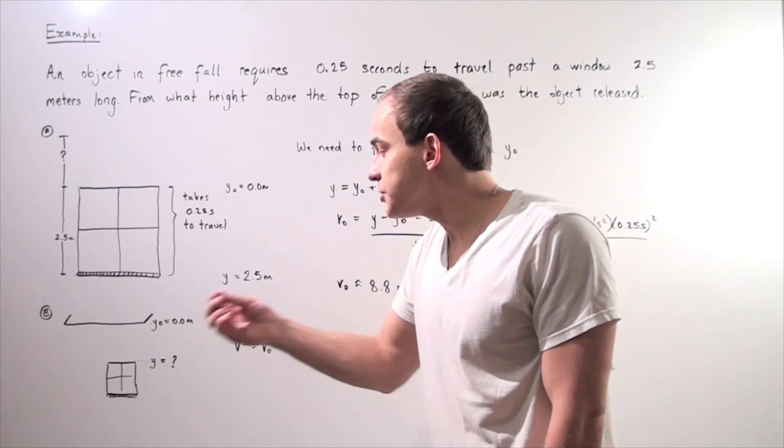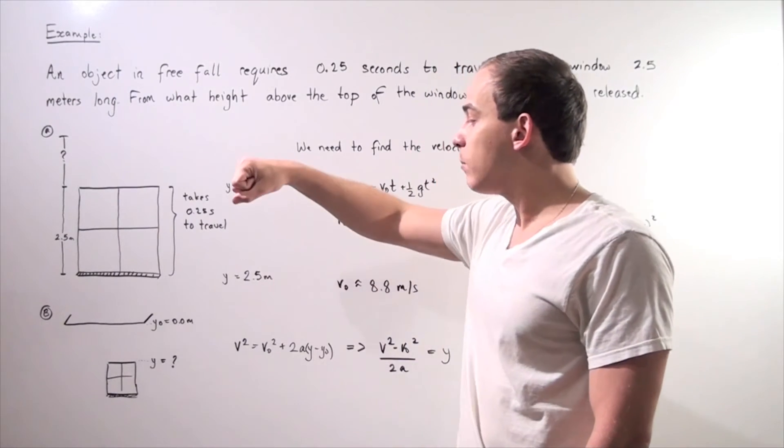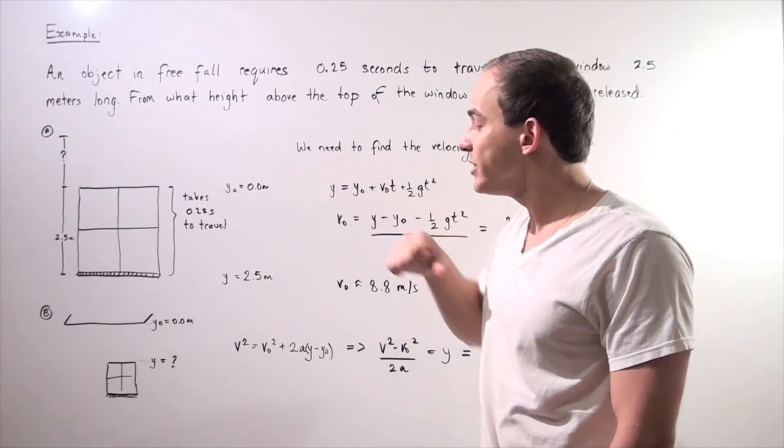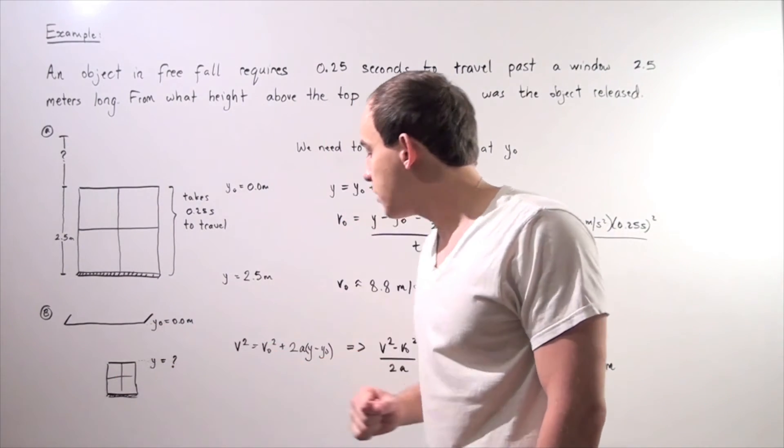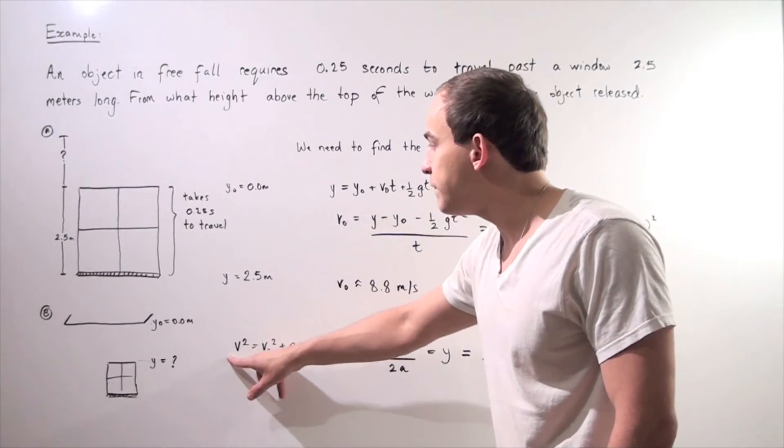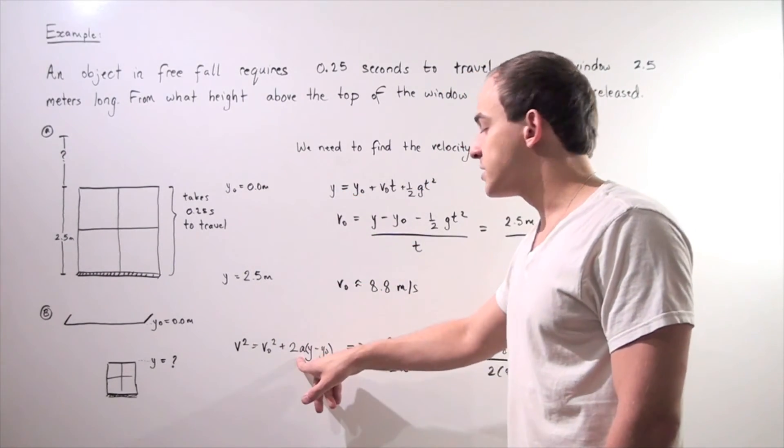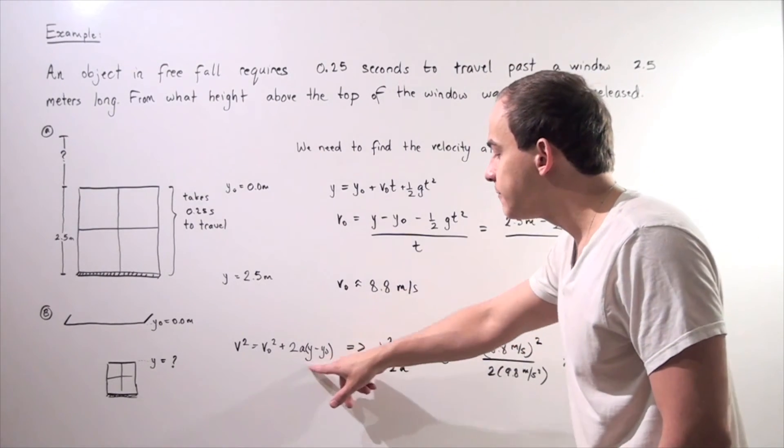Now, in this case, our initial velocity was zero. That's at the point when our ball or our object was released. This is our final velocity at the top of the window. So our final velocity, initial velocity, this is zero. This is what we found in part A. Our acceleration is the same. It's positive. And this is what we want to find.